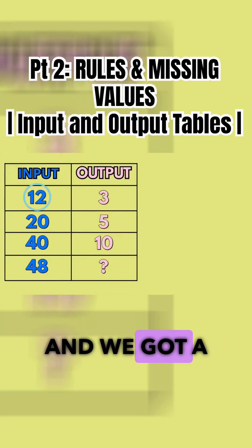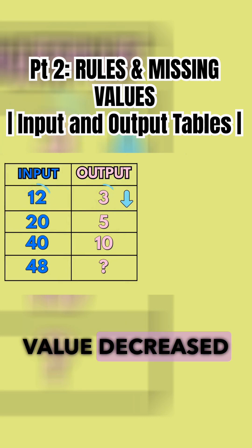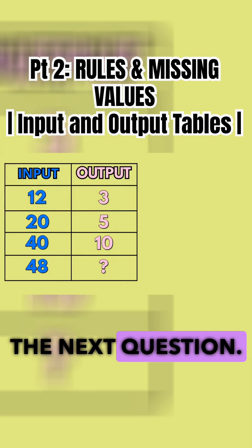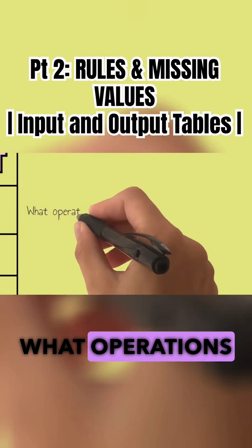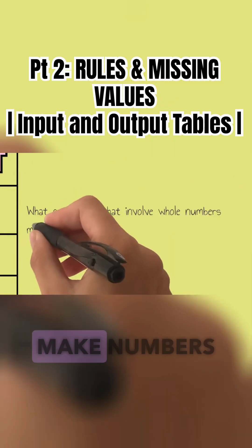With the number 12 and we got a smaller number, and since our value decreased we can ask ourselves the next question. What operations that involve whole numbers make numbers smaller?